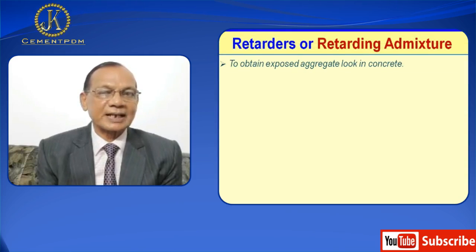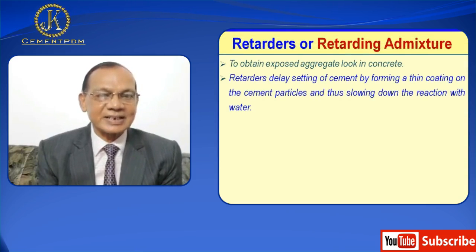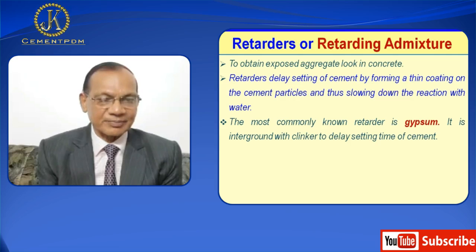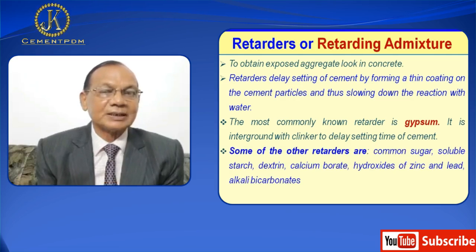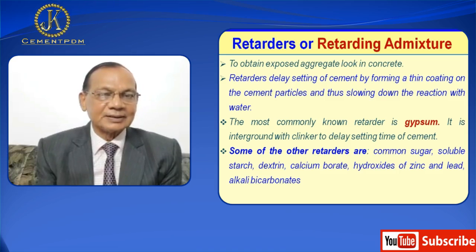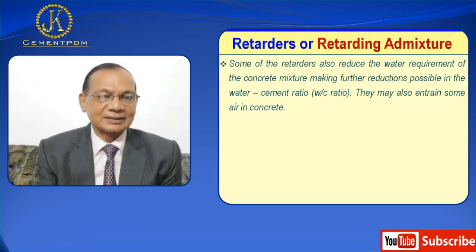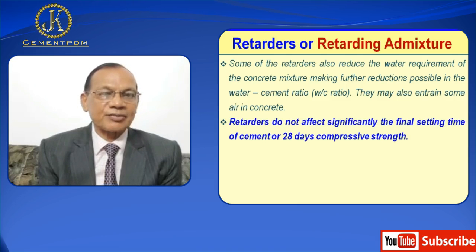Retarders are also used to obtain exposed aggregate surface finish. Retarders delay setting of cement by forming a thin coating on the cement particles, thus slowing down the reaction. The most commonly known retarder is gypsum, which is interground with clinker to delay setting time. Some other retarders are common sugar, soluble starch, dextrin, calcium borate, hydroxides of zinc and lead, and alkali bicarbonate. Some retarders also reduce the water requirements of the concrete mixture, allowing a reduction in the water-cement ratio, and may also entrain some air in concrete. Retarders do not significantly affect the final setting time of cement or 28-day compressive strength.